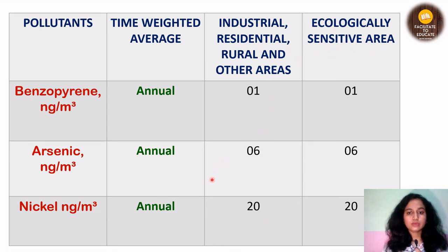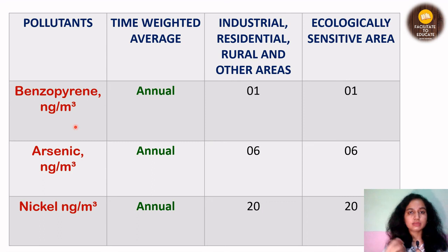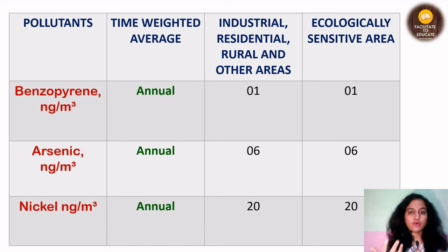So those were the standards that are set. To recap the key things to remember: firstly, the unit in which each pollutant is measured; secondly, the amount of time for which it is measured and the values; also, for which areas the standards are set; and finally, the names of all 12 gases for which the standards are set.